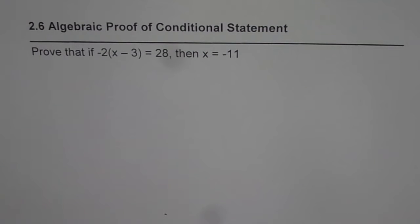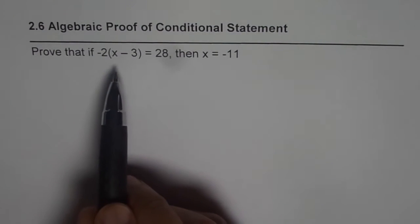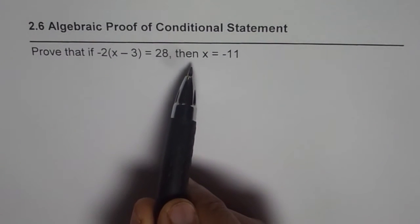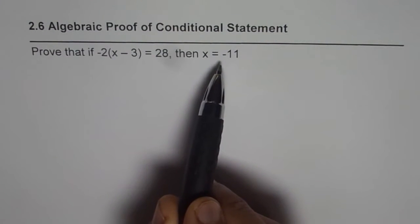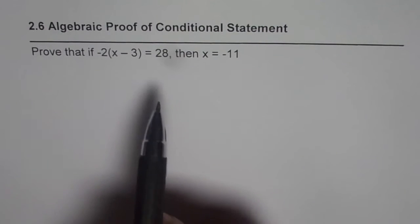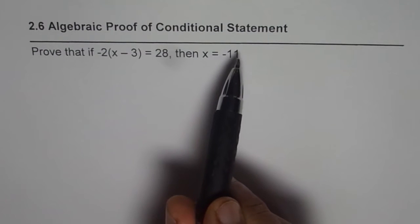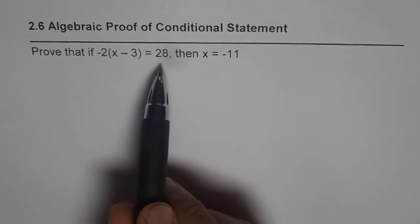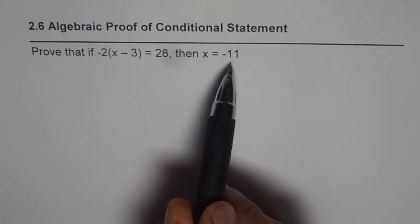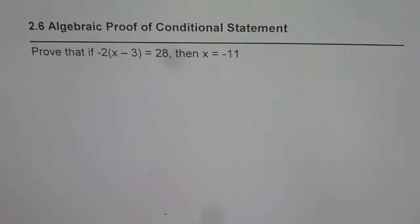We will prove that if -2(x - 3) = 28, then x = -11. This particular question is a conditional statement: if one part is true, then the solution is that. I hope you understand what is algebraic proof, conditional statement, and our strategy for how to prove it.